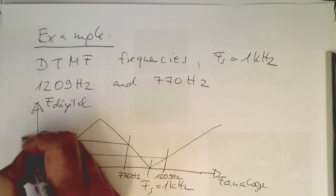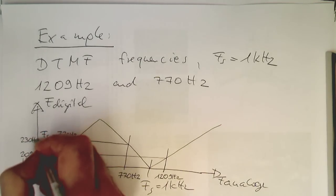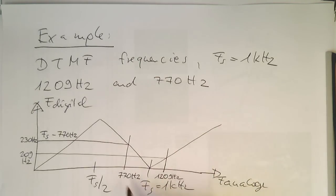This gives us 230 hertz. So this DTMF frequency maps onto 230 hertz, and this DTMF frequency maps onto 209 hertz.